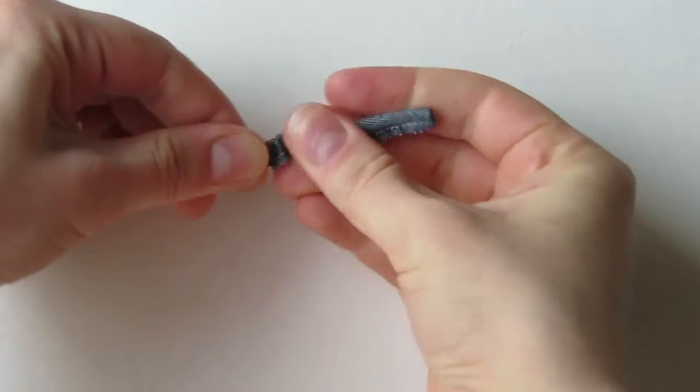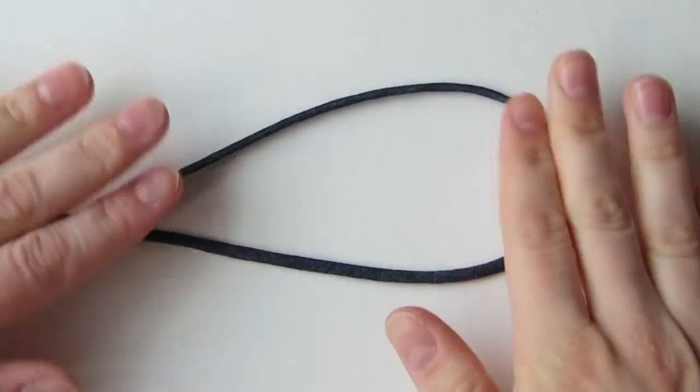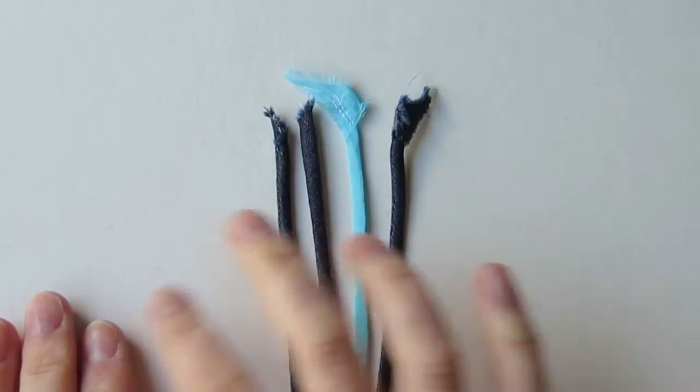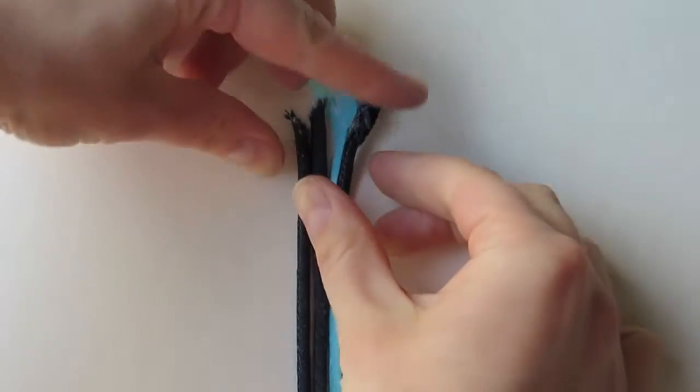When you finish turning the tube, give it a gentle press with an iron. Once you have your bias strips all sewn, lay them out color, color, accent, color, then squish them together and sew them at the top edge.